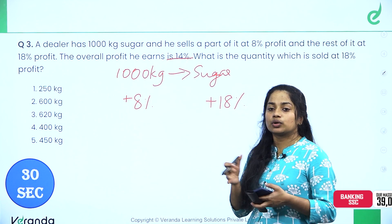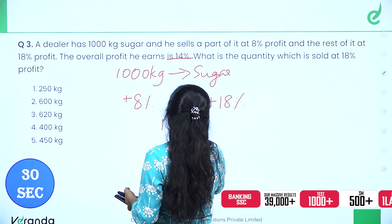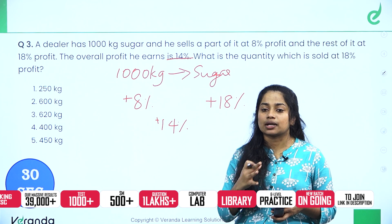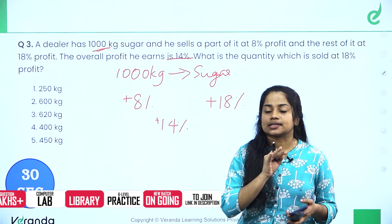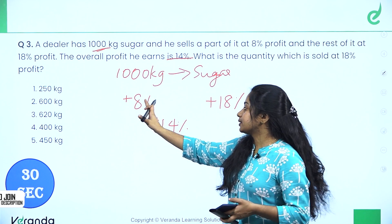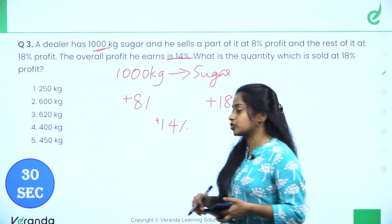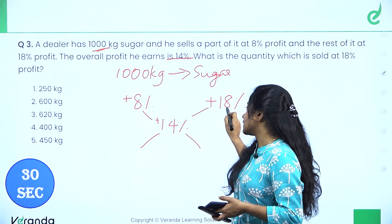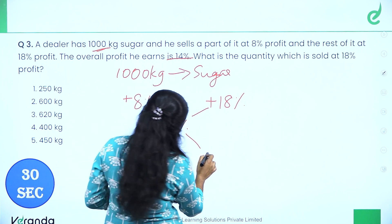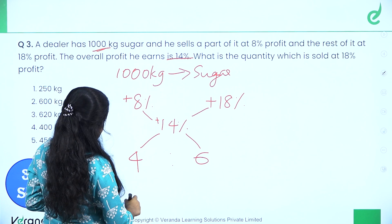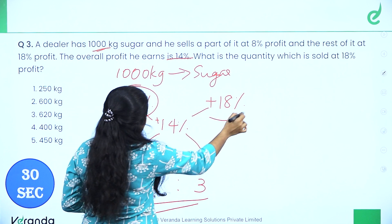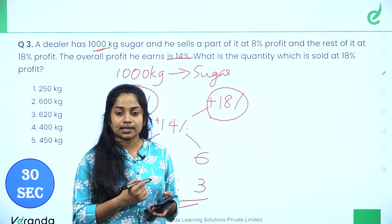The two parts are divided — the first part is at 8% and the second at 18%, with an overall profit of 14%. Using alligation: 18 minus 14 equals 4, and 14 minus 8 equals 6. Simplify 4:6 to get 2 is to 3. So 8% corresponds to 2 units and 18% corresponds to 3 units. Total is 5 units.